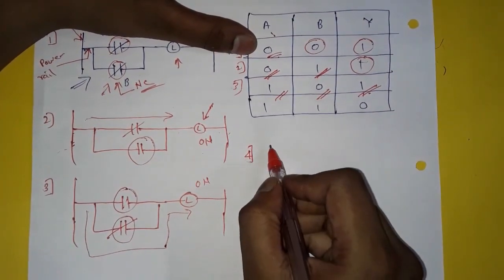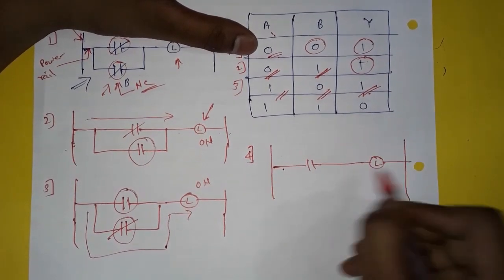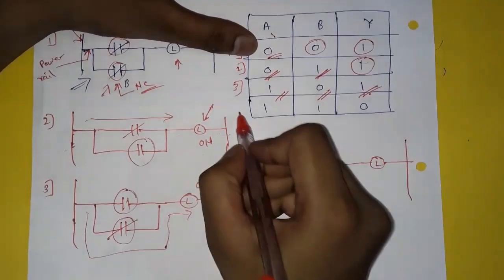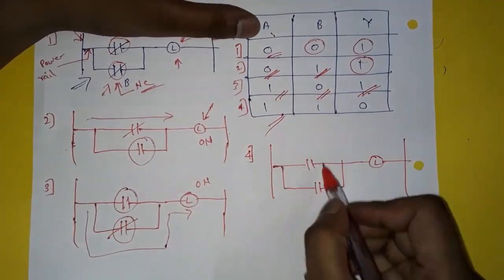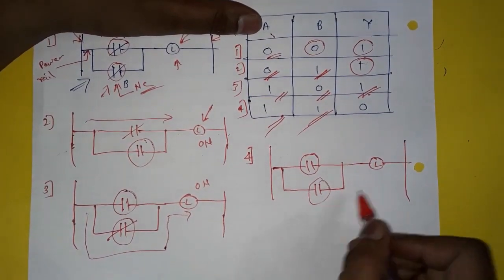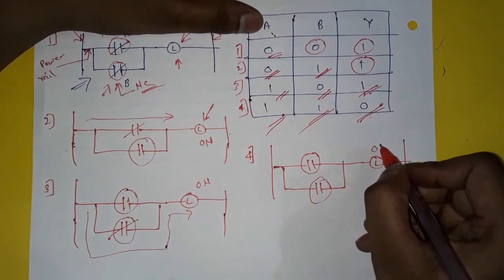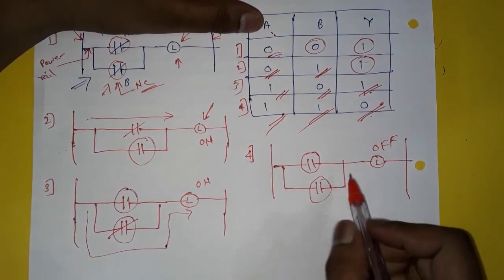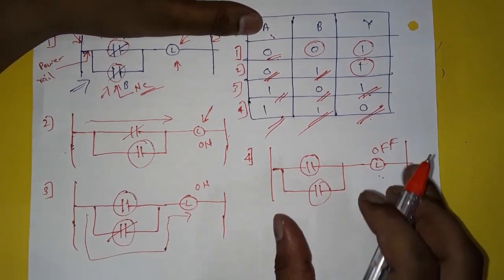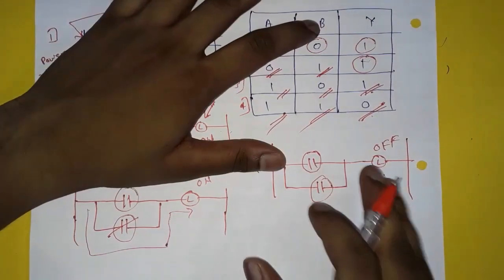In the fourth condition, A is energized so its contacts get open, and B is also energized so its contacts also get open. The lamp will not glow, so Y is 0 — it remains in off condition. There is no current flow towards the lamp as both contacts remain open.